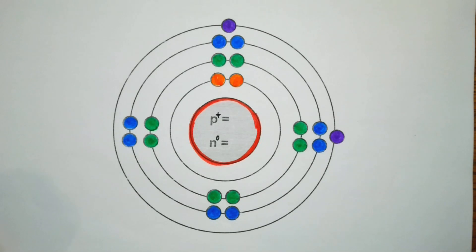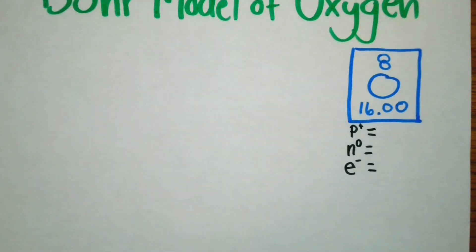So we're only going to be doing elements from hydrogen all the way up to calcium. After that some different things are happening. So let's go ahead and get down to the Bohr model of oxygen.